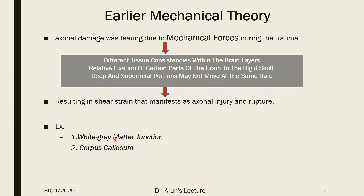A second example is the corpus callosum, which is relatively fixed to a certain part of the brain or to a rigid skull. So if there is strain applied, it can easily sustain axonal injury when compared to other regions.